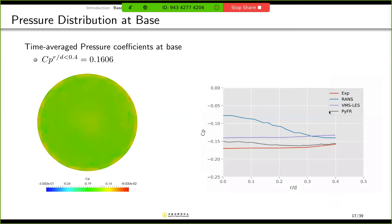And I also compared the pressure distribution at base. And the time-averaged pressure coefficient is about minus 0.16. And this is the pressure contour at base surface. As you can see here, the pressure is almost constant, unlike the RANS simulation. And this is the pressure coefficient in radial direction. And red line is experimental data. And RANS simulation result is blue one. There is a big discrepancy between RANS simulation and experiment. But this gray one is PyFR result, which is the closest one compared to the experiment.